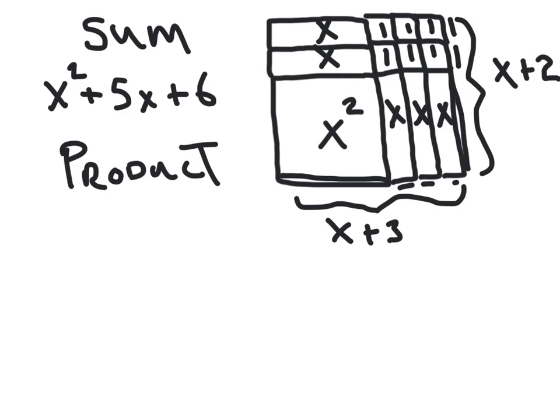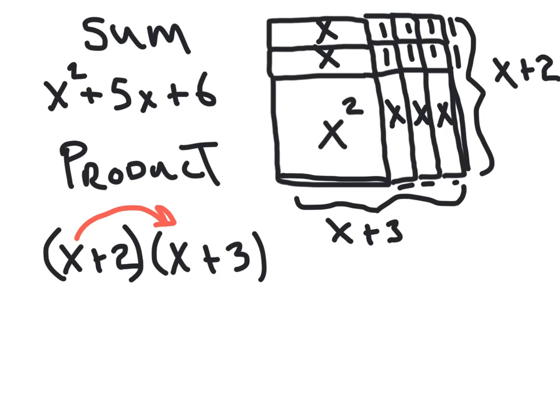As a product, we could say it is x plus two times x plus three. Now check this out - what we really mean is if we take this and multiply all the stuff together, all of these things get multiplied together, every single combination gets multiplied.